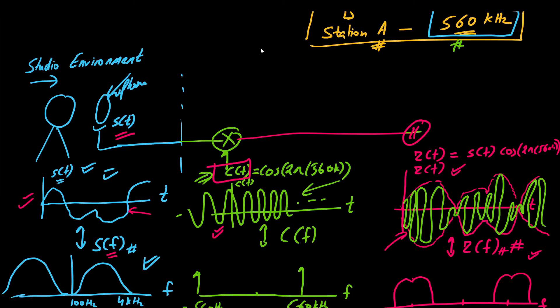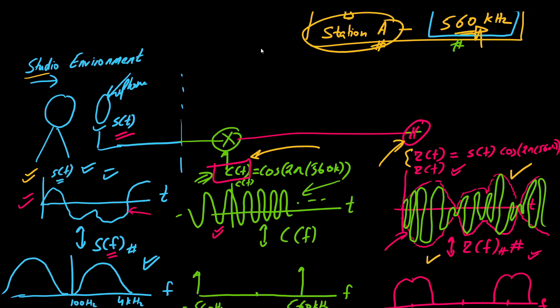So the time domain interpretation and its frequency domain interpretation of the modulated signal: it started in the studio with the speaker having a low-frequency signal, which is modulated to high frequency by means of the oscillator operating at cos(2π · 560 kHz). After that we can have an amplifier, and then transmit it by means of an antenna over the radio channel.